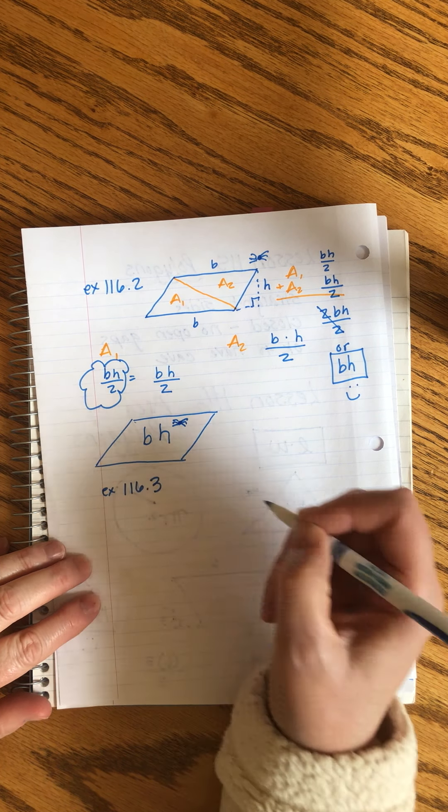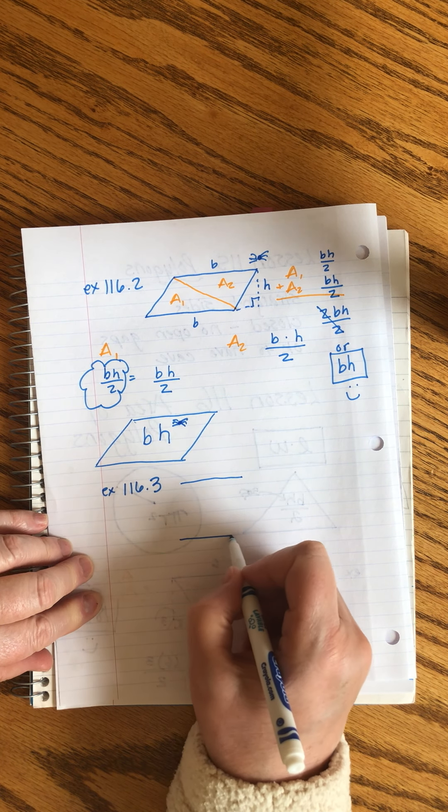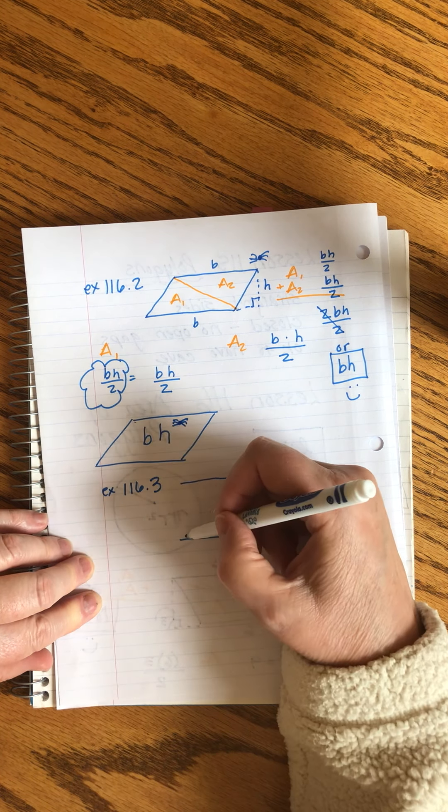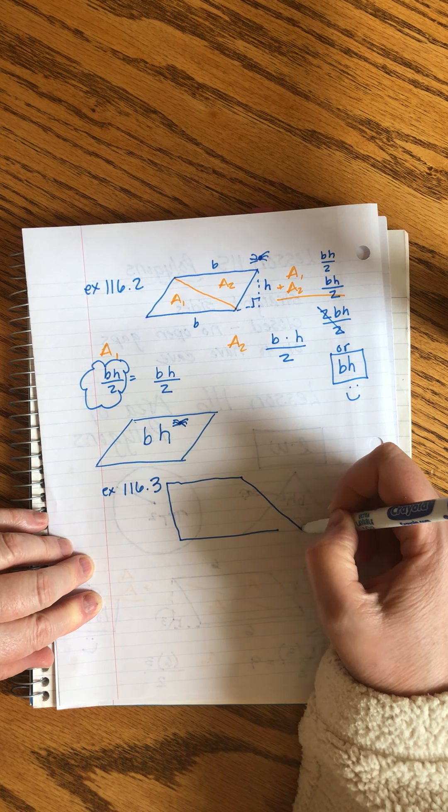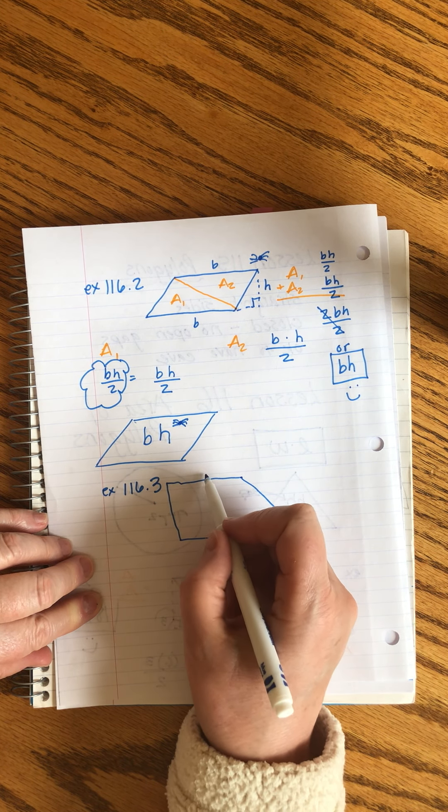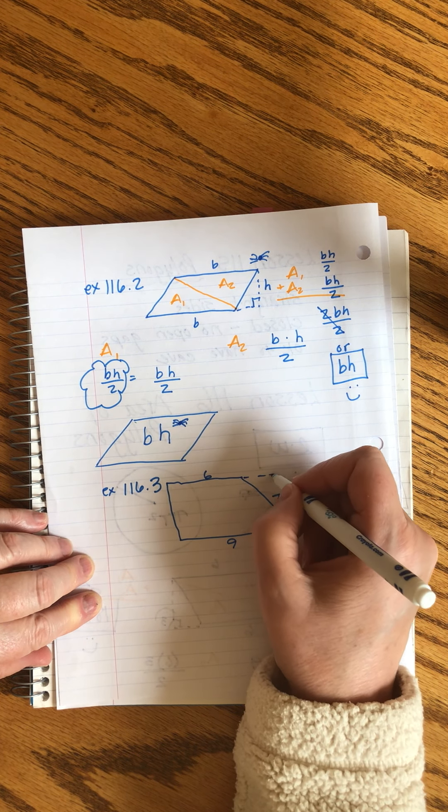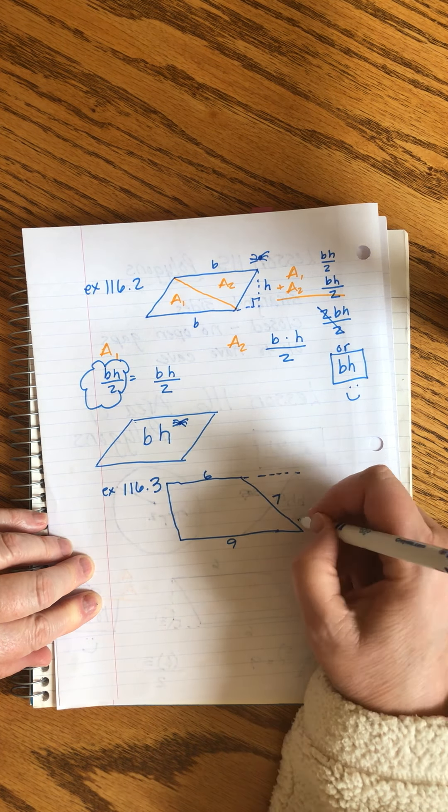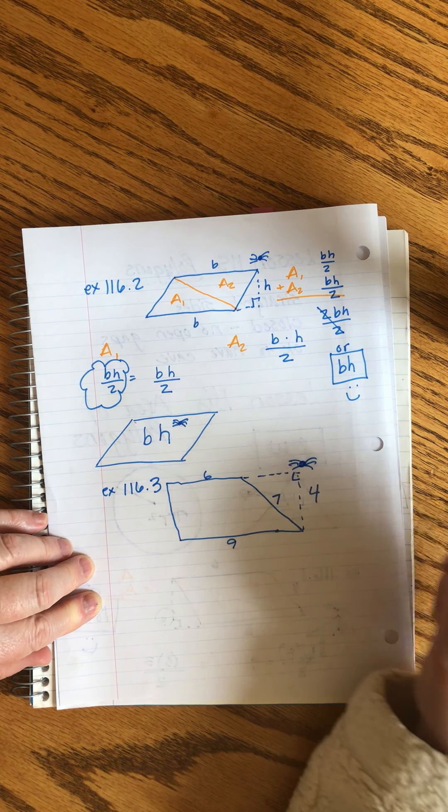Two more. Find the area of this trapezoid. This is a trapezoid, which means two sides are parallel, but otherwise it's kooky. So nothing's at right angles in the shape. We find out that this is six. This is nine. This is seven. But if you draw the corner, this is four. And we know right away, this is where the spider is sitting, right?